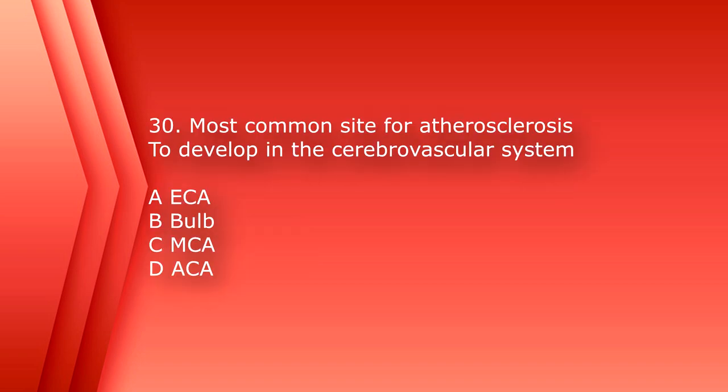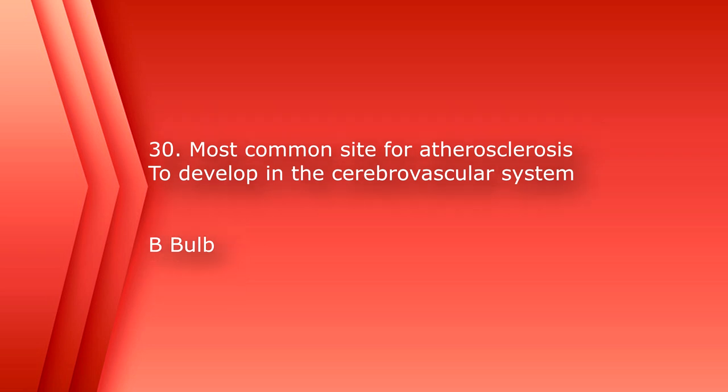Number 30: the most common site for atherosclerosis to develop in the cerebrovascular system. A. ECA, B. Bulb, C. MCA, or D. ACA. The answer is B, the Carotid Bulb.